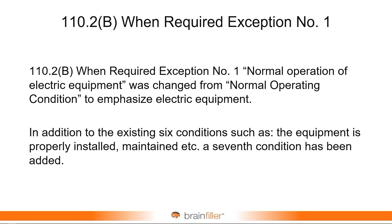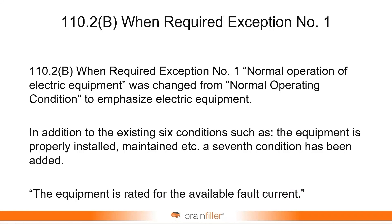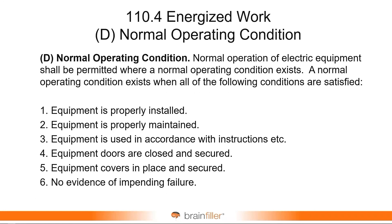This is where you find the six conditions that define the normal operation of electric equipment. There's been a seventh condition that's been added: the equipment is rated for the available fault current. Previously in 2021, it was referred to as normal operating condition, and we had six conditions: the equipment is properly installed, properly maintained, used in accordance with the instructions, the doors are closed and secured, the covers are all in place and secured, and there's no evidence of impending failure.